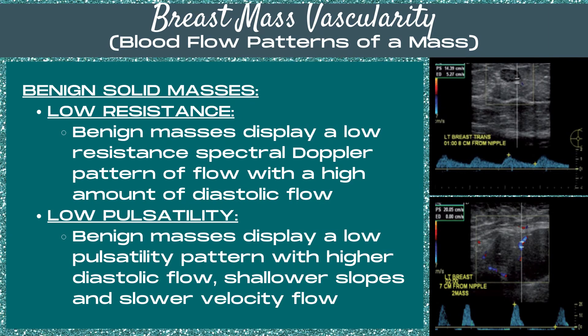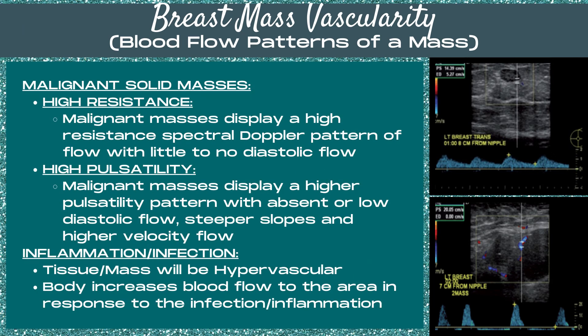Let's look at the spectral Doppler patterns of benign versus malignant solid masses. For benign solid masses, the vascularity is a low resistance pattern. Benign masses display a low resistance spectral Doppler pattern of flow with a high amount of diastolic flow in the waveform, along with low diastolic flow variation, shallower slopes, and slower velocity flow.